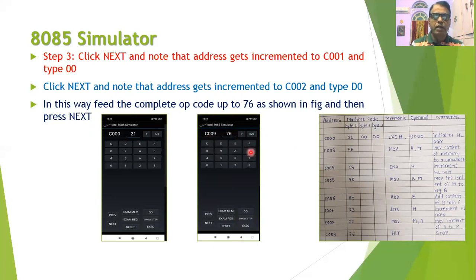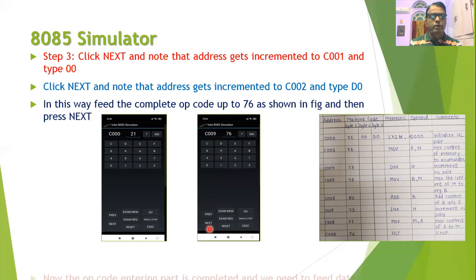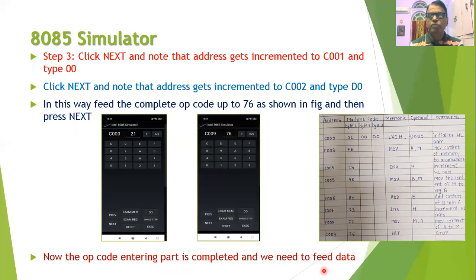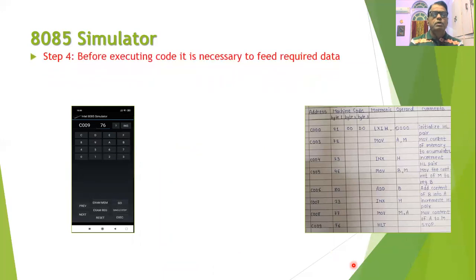After entering 76 and pressing Next, the opcode entering part is completed. Before execution of the program, we need to feed the data — that is, we need to feed the two numbers into locations D000 and D001. In the next step, we need to feed the required data.